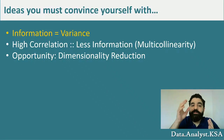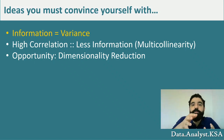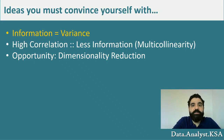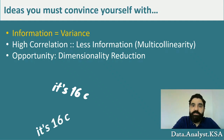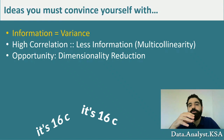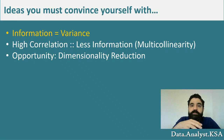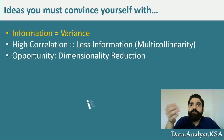The first idea you have to convince yourself with is that information is equal to or proportional to variance. This means the amount of information in a dataset is related to the variance of that data. To convince yourself, imagine asking 'how's the weather today?' You get one answer: it's 16 degrees Celsius. Then you get 10 more answers all saying 16 degrees Celsius — the additional information is negligible because the variance is zero.